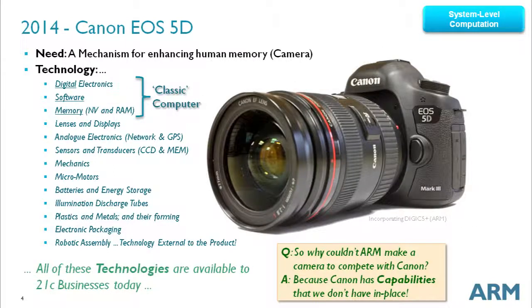This is the same camera they produce today — it's got a computer in it, an ARM computer as it happens. ARM supplies the know-how that people use to design chips, which are then put into products. The modern camera still has lenses, but also displays, analog electronics, sensors and transducers for sensing focus, and incredibly sophisticated mechanics. Micromotors are used for focusing, literally physically rotating the lens. There are batteries and energy storage, illumination discharge tubes, plastics and metal. But we mustn't forget an important part of this product: you couldn't sell it as a bare printed circuit board. People buy products, not electronics or the technologies inside them.